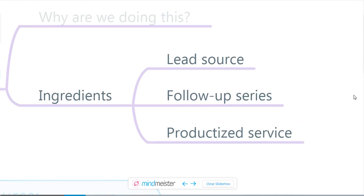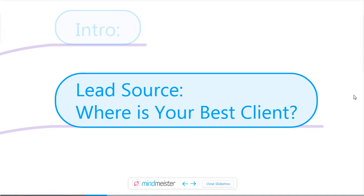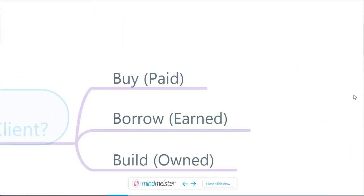When looking at a marketing funnel, it's got some basic ingredients. It begins with the lead source, you've got to have a follow-up series, and you need a productized service as the third piece. There are three basic categories for where you get leads: you can buy them through paid advertising, you can borrow them — which they call earned — through some sort of partnership, or you can build them from your internal audience. Either of those works; you just want to find the one that is your fastest advantage.